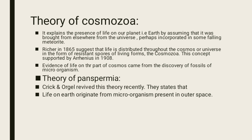Next is the Theory of Cosmozoa. It explains the presence of life on our planet Earth by assuming that it was brought from elsewhere in the universe, perhaps incorporated in some falling material. Richard, in 1865, suggested that life is distributed throughout the cosmos in the form of resistant spores of living forms — the cosmozoa. This concept was supported by Arrhenius in 1908, and evidence came from the discovery of fossils of microorganisms.